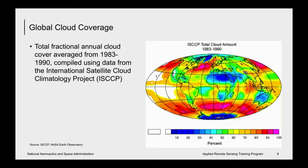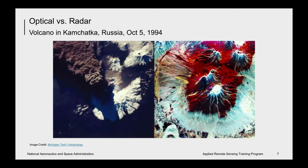Here is an example of an optical versus a radar image. This is the Chebskoy volcano in Kamchatka, Russia, which began to erupt on September 30th, 1994. The image on the left is a photograph taken by astronauts aboard the space shuttle during the early hours of the eruption, clearly showing a thick ash plume. The image on the right is a radar image acquired during the eruption by CIRC-XR — one of the early synthetic aperture radars flown in space on the space shuttle Endeavour. It's a false color composite of L-band HH, L-band HV, and C-band HV, and on the radar image you can clearly see the surface of the Earth despite the ash plume.